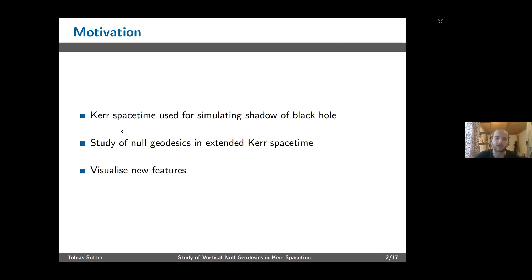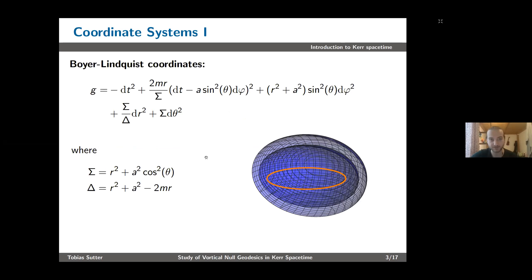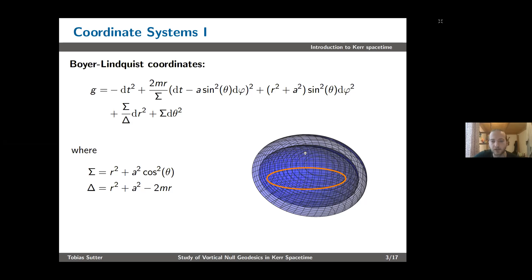We want to visualize new features, so let me quickly go through a few basics of Kerr spacetime for those not completely familiar with it. This is the metric in Boyer-Lindquist coordinates, where you have the mass parameter M and the rotation parameter A. The metric has problems at sigma and delta being zero. Sigma being zero corresponds to a singular ring lying in the equatorial plane, which is a curvature singularity, whereas delta being zero corresponds to the two horizons.